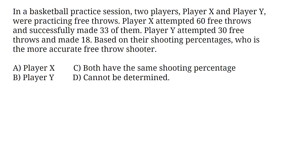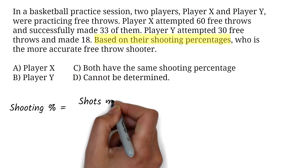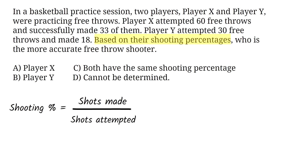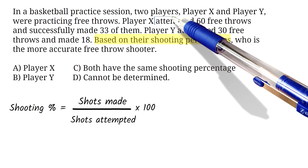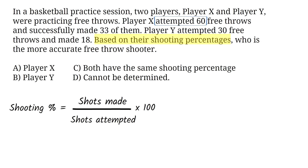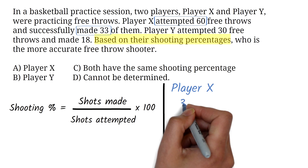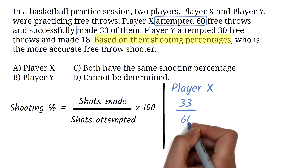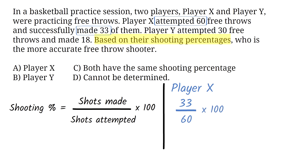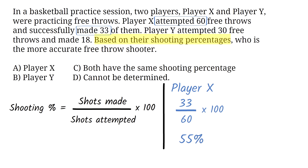Comparison questions are common on the GED math. Here, you've been told to compare based on their shooting percentage. To find the shooting percentage, we have to divide the number of successful shots by the total number of attempts and multiply it by 100. Player X attempted 60 free throws and successfully made 33 shots. To calculate Player X's shooting percentage, divide 33 by 60, then multiply by 100. We do this on the calculator to get 55%. So Player X's shooting percentage is 55%.